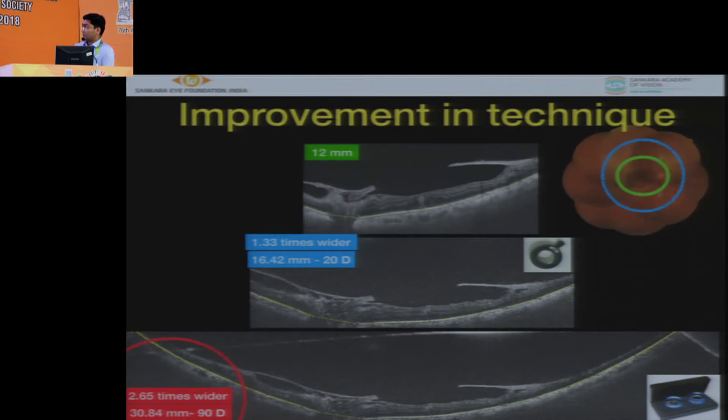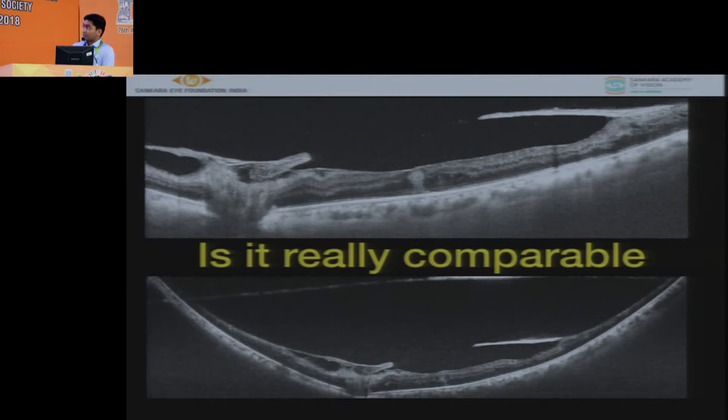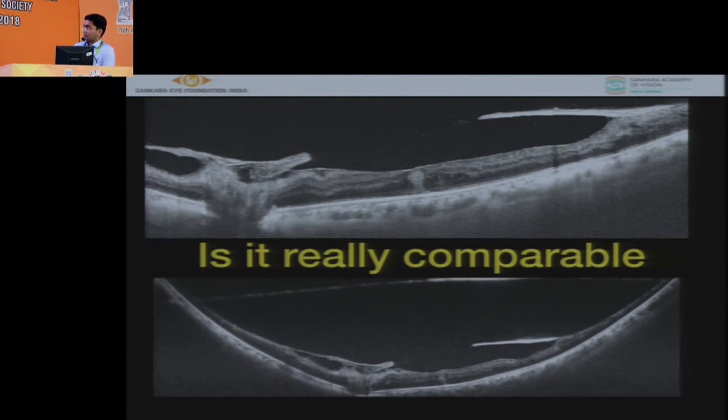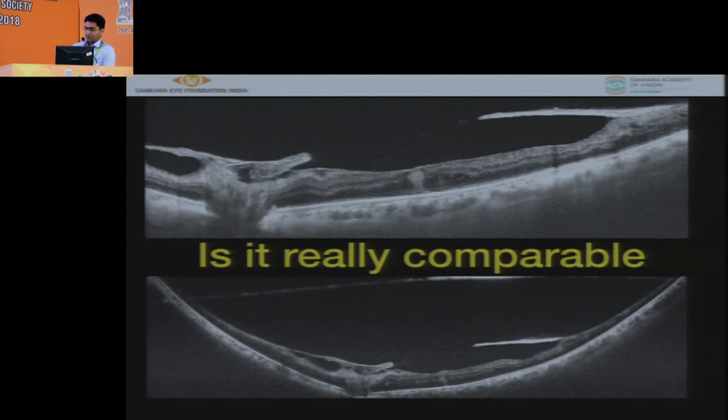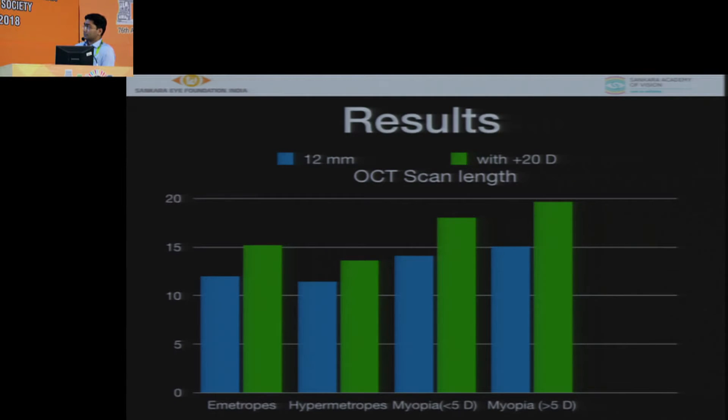As you can see is it really comparable? Yes the quality is as good as what you see over there. This result shows that emmetropes versus high-myopes versus myopes of less than 5 and more than 5 - all of them show that using 20-diopter has a wider field of view, widest in the high-myopes.